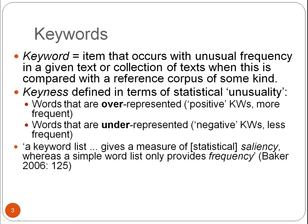Importantly, positive means over-represented and negative means under-represented here — it has nothing to do with attitudinal meaning. So a negative word like 'terrible' could, in fact, be a positive keyword in a corpus.